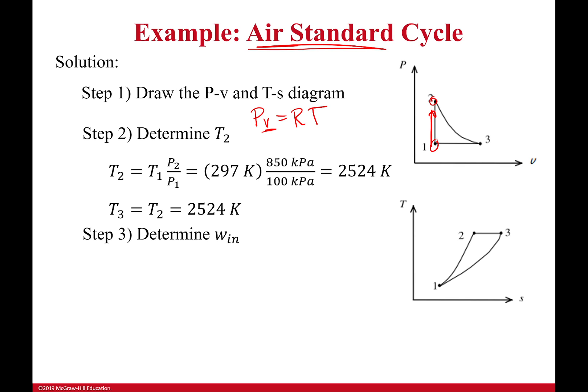We're going to work on the ratio of back work first. To do that, I need to find the work in. I want to mention something — I kind of simplified things earlier when introducing this concept. The area on the PV diagram represents the work of the compressor, and both the PV and TS diagram areas are equal to the net work. That is completely true.